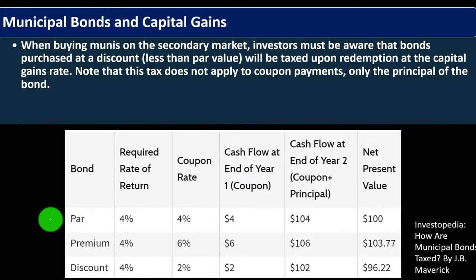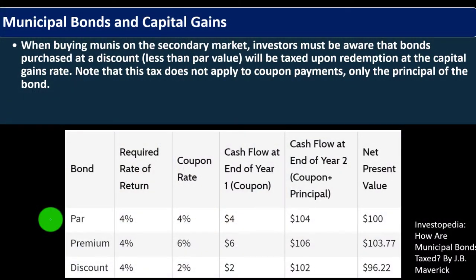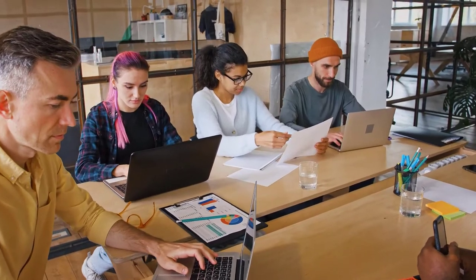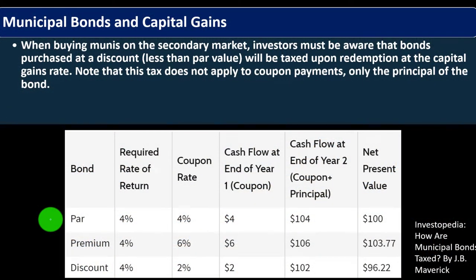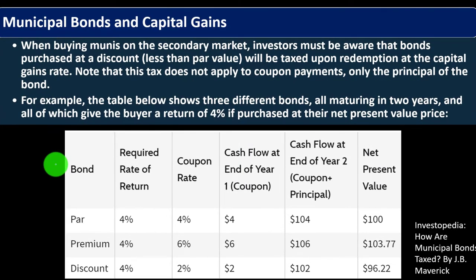When buying munis on the secondary market — meaning from investors who already purchased from the primary market rather than directly from the issuer — investors must be aware that bonds purchased at a discount, less than par value, will be taxed upon redemption at the capital gains rate. Note that this tax does not apply to coupon payments, only to the principal of the bond.